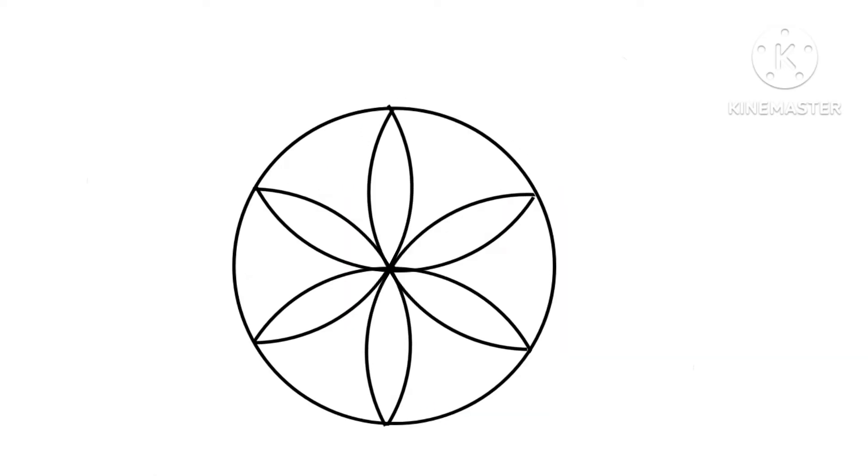Let's make another type of geometric flower from this first type of geometric flower. Without changing compass length keep compass needle here and draw an arc like this.